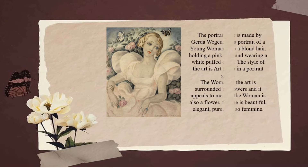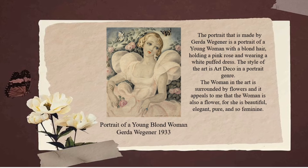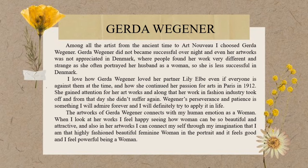The painting shown is Gerda Wegener's 1933 work entitled 'Portrait of a Young Blonde Woman.' It is a portrait of a young woman with blonde hair, holding a pink rose and wearing a white puffed dress. The style is Art Deco in the portrait genre. The woman is surrounded by flowers, and it appeals to me that the woman is herself like a flower — beautiful, elegant, pure, and feminine.